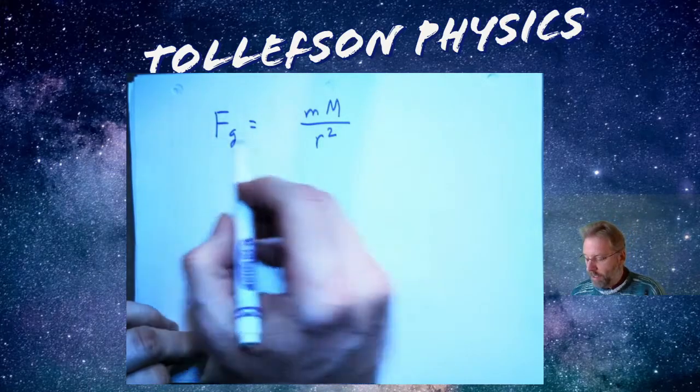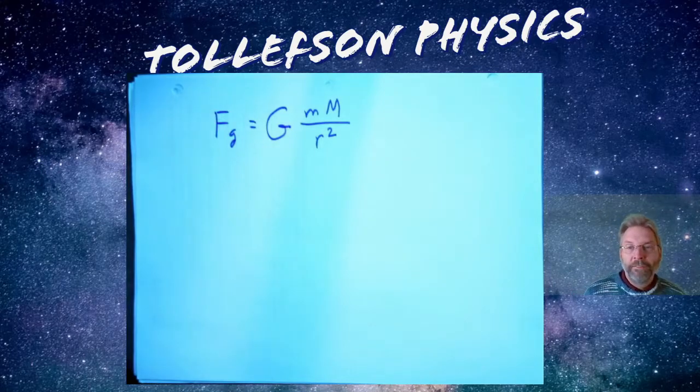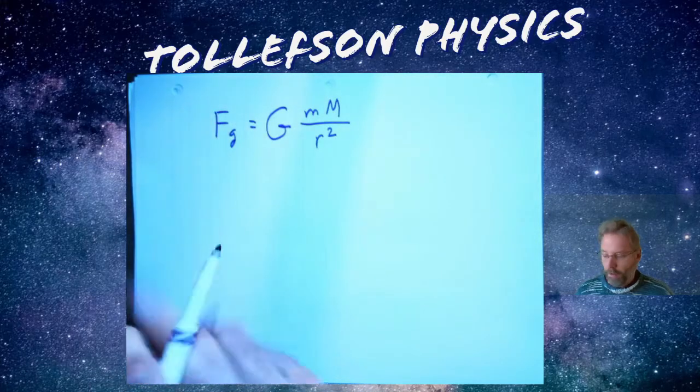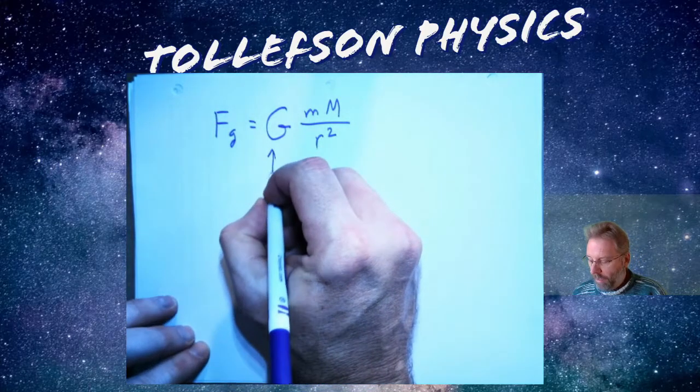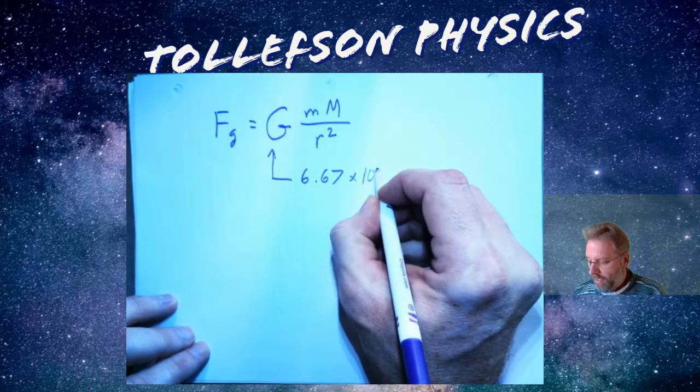I need to get to Newtons, so we need a constant - big G. Big G is that constant, it was an experimentally determined constant that allows us to do this all in SI units. The value of that just happens to be 6.67 times 10 to the negative 11th.